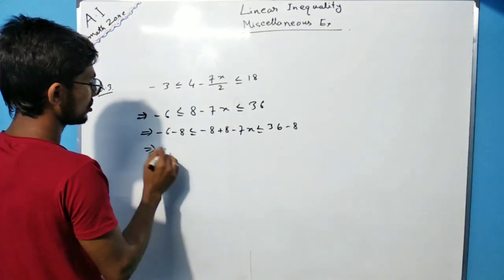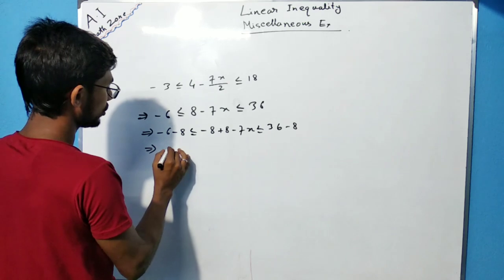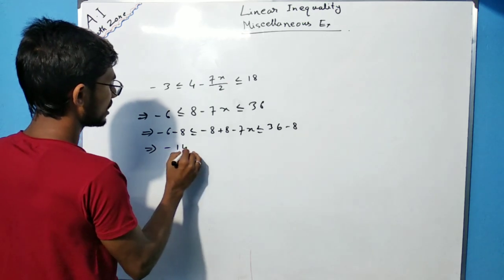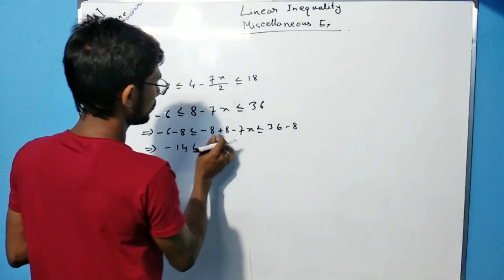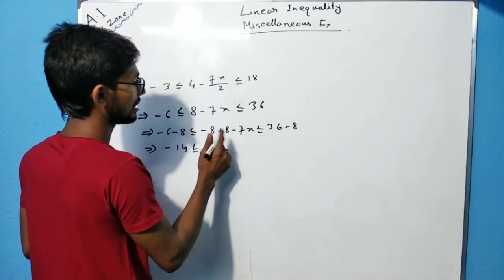This gives us: minus 14 is less than or equals to minus 7x less than or equals to 28, and the 8s cancel.